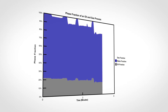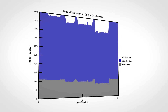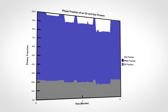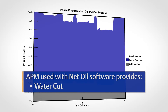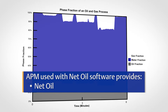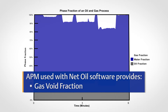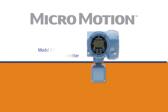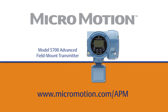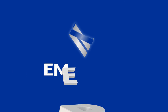When used with the net oil computer software, advanced phase measurement is able to provide water cut, net oil, shrinkage factor, and gas void fraction. For help understanding if the advanced phase measurement software is appropriate for your process, please visit www.micromotion.com/APM.